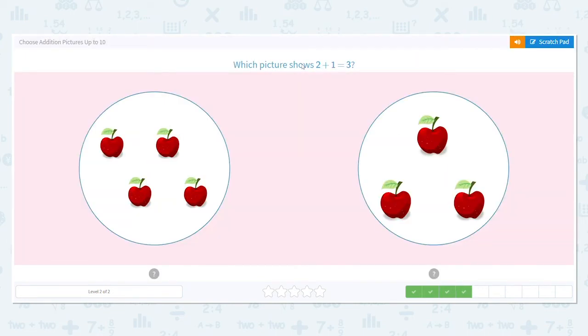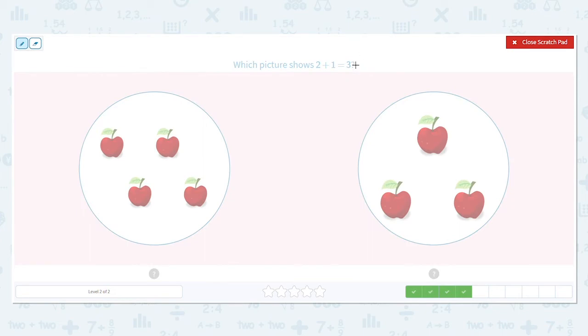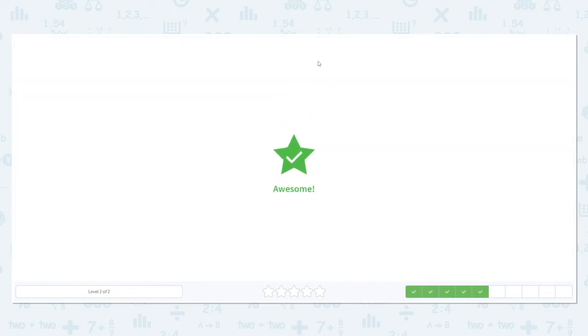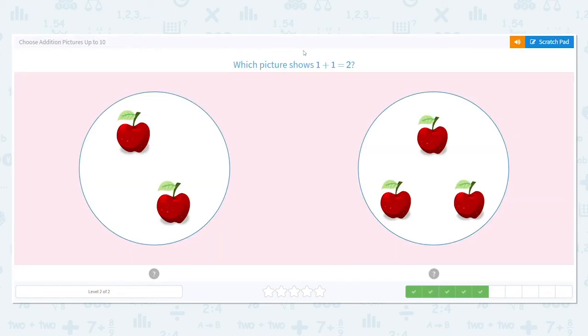Next, which picture shows 2 plus 1 equals 3? I want you to try this one on your own. 2 plus 1 equals 3. Remember, we want the total to be 3 apples. Good job. It's this one on the right. Next one, which picture shows 1 plus 1 equals 2? You can do this. Which side shows a total number of 2 apples? This one. Good job.